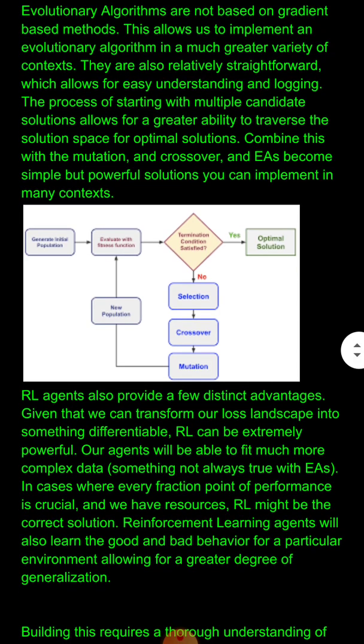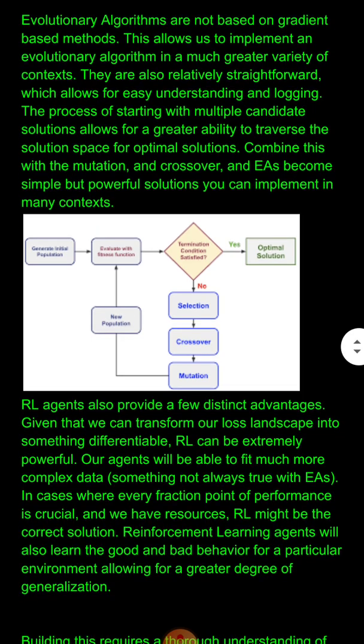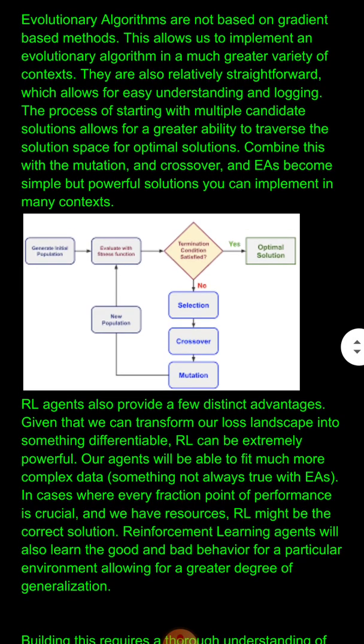In cases where every fraction of a point of performance is crucial and we have the resources, reinforcement learning will take the edge over evolutionary methods, giving you that peak performance — that 99.9% — that EAs might miss. Think of cases such as self-driving cars, where you don't want any crashes or problems. In such cases, RL is generally your go-to, and most self-driving car architectures use some form of reinforcement learning in their computer vision pipeline.